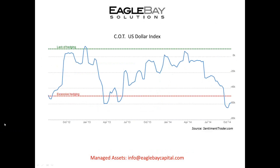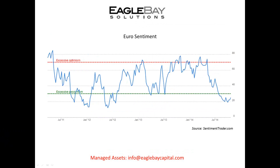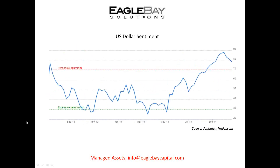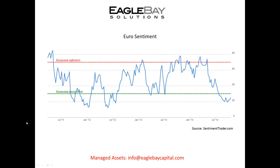Here's the Commitment of Traders report telling us what the hedgers — the smart money — are doing. Smart money is hedging up here and thinks dollars are going lower. Here's euro sentiment — they hate the euro. Notice how they loved the euro back in May when you should have hated it, because the euro just got slaughtered. Now they hate it, and that's starting to make me like it. Remember that the euro is 60% of the dollar index, so whatever the euro does, the dollar will likely do the opposite. That makes perfect sense and is another reason why I think the euro can get a bounce here and dollars are probably going lower.